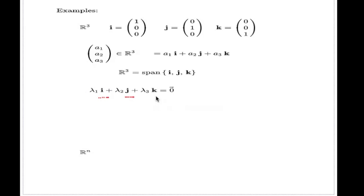i, j, and k, also linearly independent. I took a linear combination, I equated this to 0, and with the help of this representation, I realized every lambda must be 0. So this set of vectors, not only they span the whole R3 space, but they also linearly independent.